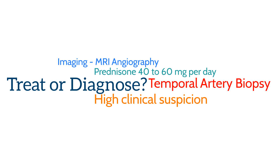Once a patient has been started on steroids, then it's time to confirm the diagnosis. Patients who have a high clinical suspicion for giant cell arteritis should undergo a temporal artery biopsy to look for signs of vasculitis. The temporal artery is chosen not just because giant cell arteritis tends to affect it, but also because it is the most accessible medium-sized artery that we can biopsy without significant surgery.